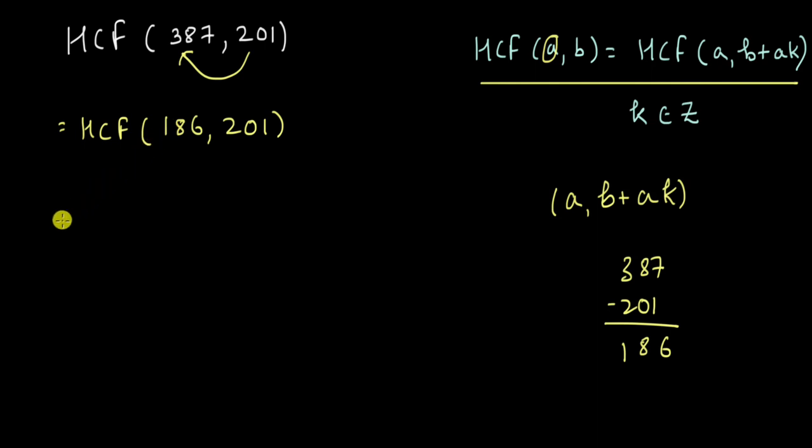I can do this again. Now I can keep 186 as the same and subtract this from 201. So I am keeping 186 as the same and I'm subtracting 186 from 201. So I can't subtract 2 times 186 because then it will become negative. So I'm just subtracting the first multiple.